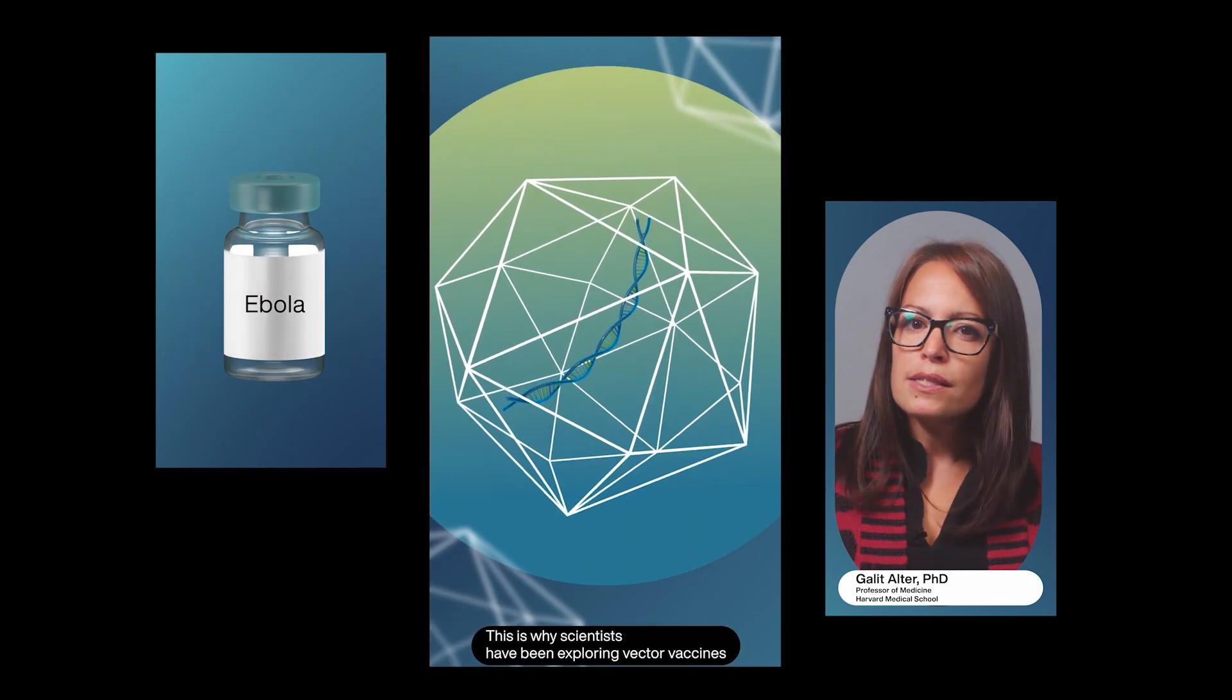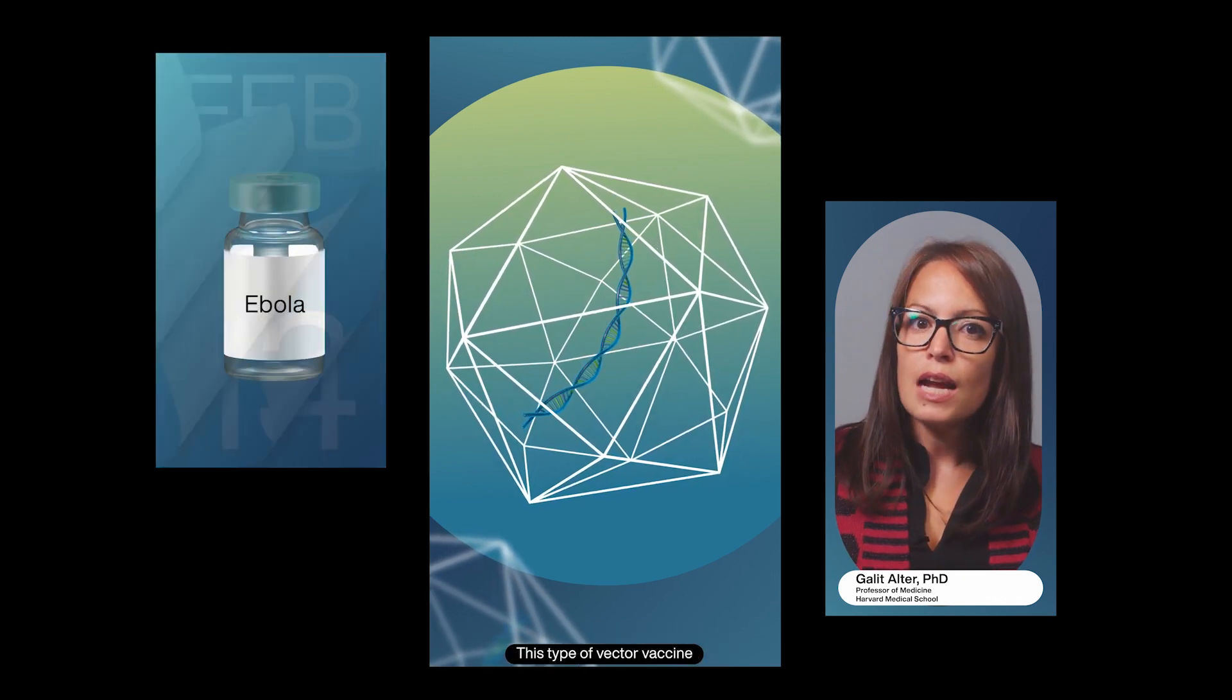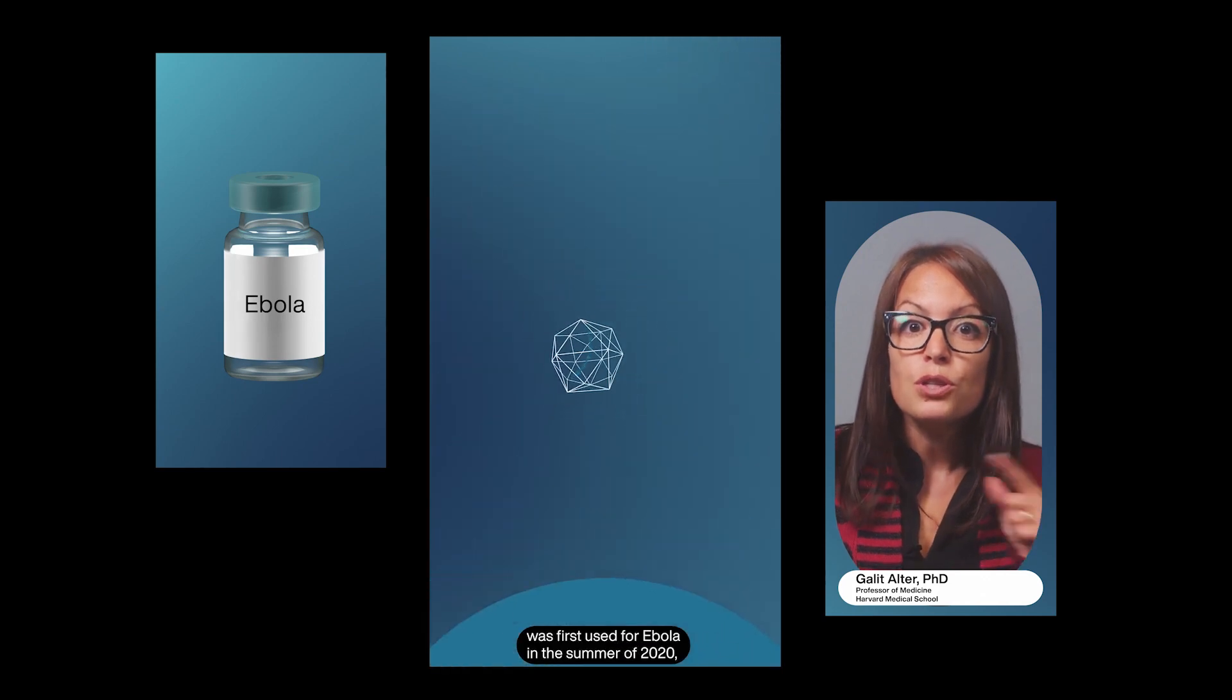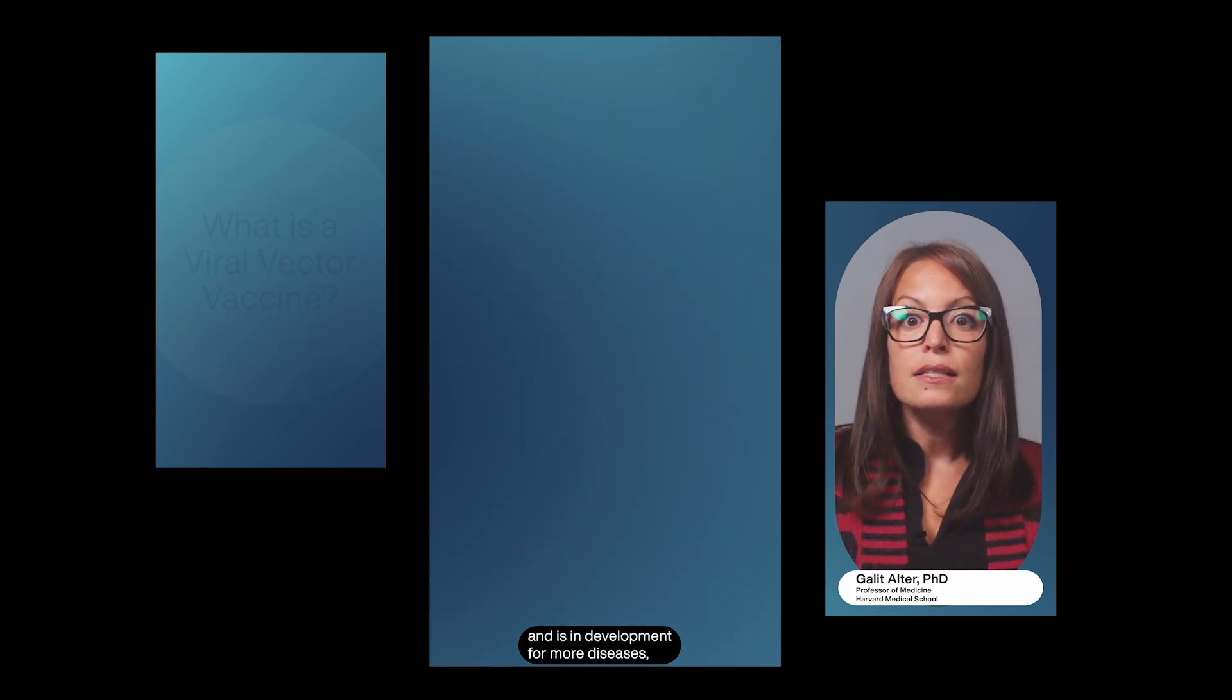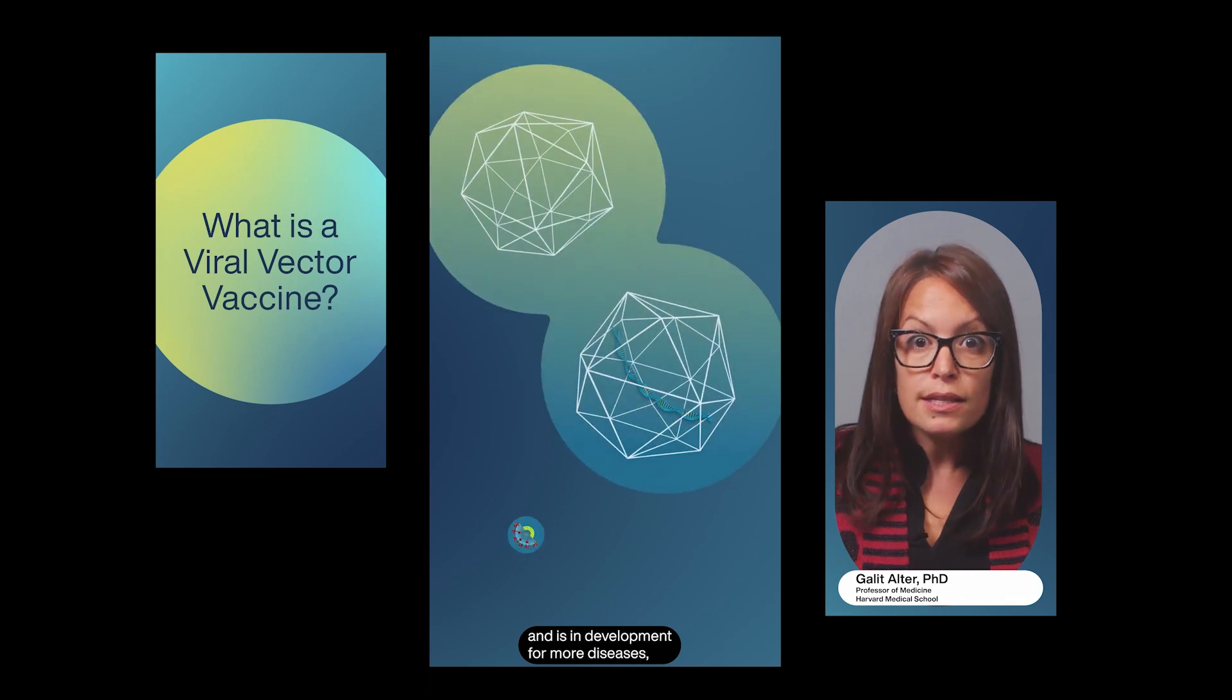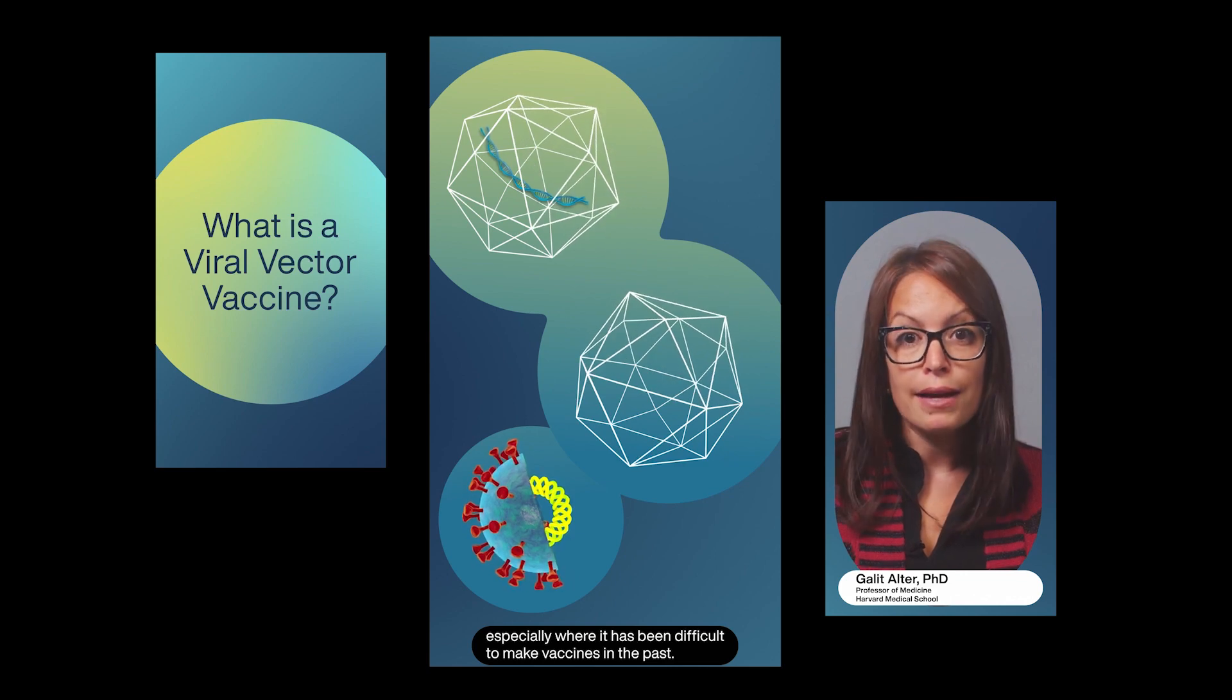This is why scientists have been exploring vector vaccines for years. This type of vector vaccine was first used for Ebola in the summer of 2020 and is in development for more diseases, especially where it has been difficult to make vaccines in the past.